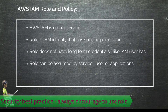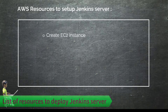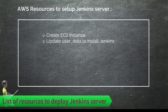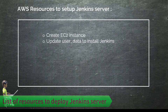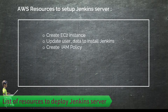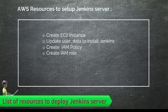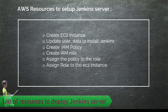These are the resources we are going to create to build a Jenkins server. First, we're going to create an EC2 instance and update the user data to install the Jenkins application including dependent software. Then we're going to create an IAM policy document and policy resource, then create an IAM role resource, attach that policy to the role, and assign that role to the EC2 instance.